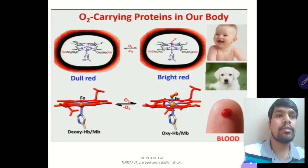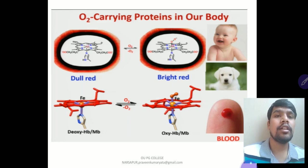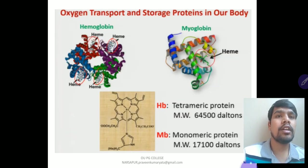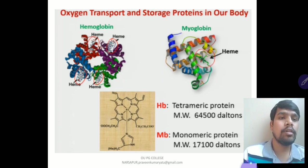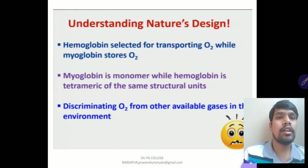O2-carrying proteins in our body include oxyhemoglobin (bright red) and deoxyhemoglobin/myoglobin (dull red). Hemoglobin has four heme groups, each holding one oxygen molecule. Myoglobin has only one heme group. Hemoglobin is a tetrameric protein with a molecular weight of around 64,500 daltons, while myoglobin is a monomeric protein with a molecular weight of around 17,900 daltons.